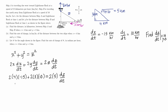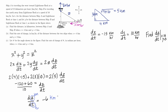We get −120 + 60 = 10(dz/dt). Dividing both sides by 10 gives −6. So dz/dt equals negative 6 kilometers per hour.